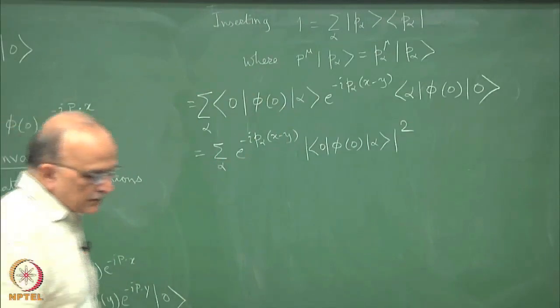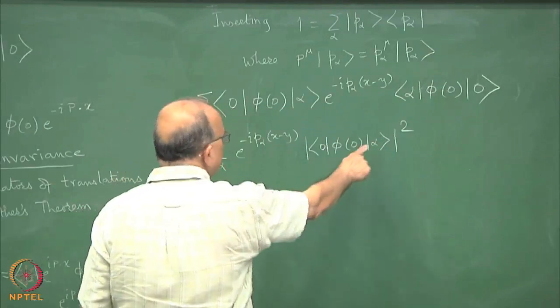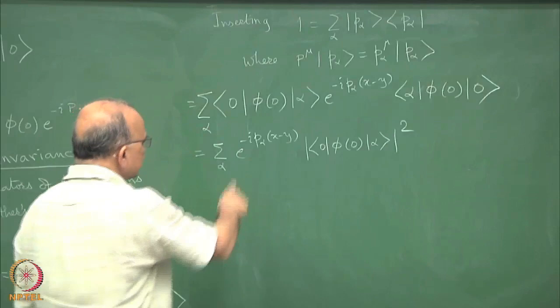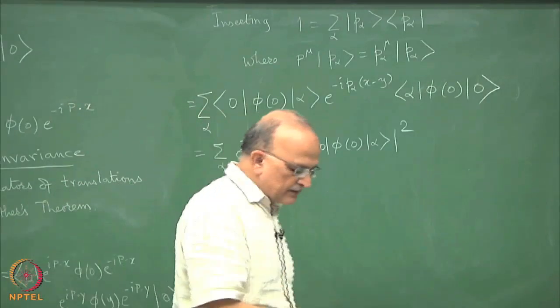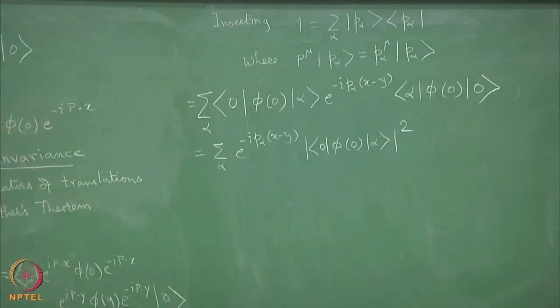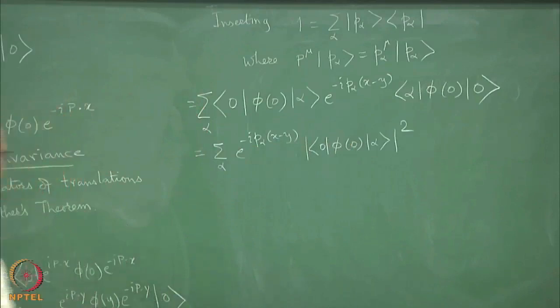If we had only the free field then only the one particle state would have contributed. Of course this is p alpha in terms of total momentum, so it is not in terms of number eigenstates. This summation would be much smaller if it was free field, but now it contains everything. And of course you have to put the terms with x going to minus x exchanging x and y, so that we get the other term with a minus sign.